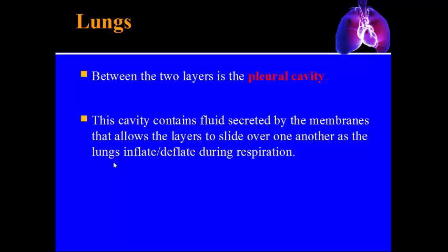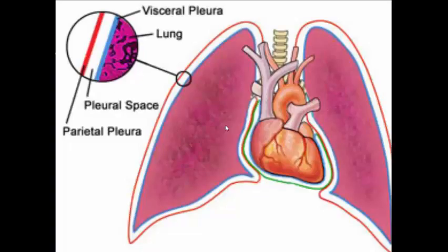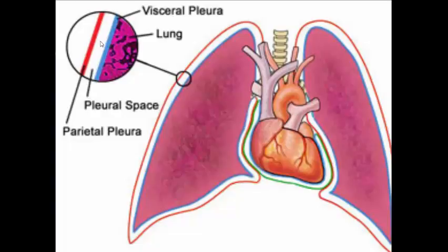Between the two pleural layers is a very small space called the pleural cavity, filled with fluid that helps the lungs expand and decrease in size during respiration. The visceral pleura contacts the lung directly, goes all the way around, and doubles back at the hilum to become the parietal pleura — really one long membrane folded back on itself. The space between them is greatly exaggerated in diagrams but is actually very small.